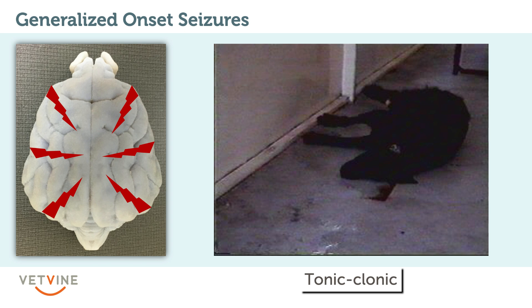We used to call these grand mal seizures and now we call them tonic-clonic seizures. Here is an example of a dog having a seizure. The animal will fall onto its side, its consciousness will be impaired, and we'll see paddling movements or flexion and extension of all limbs. Oftentimes associated with that we'll see chomping of the jaw.